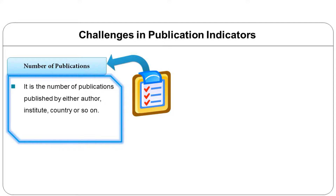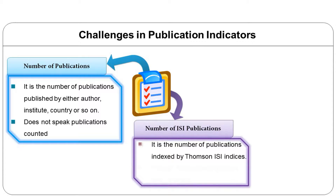Although this count is very straightforward and a forward indicator that can be easily calculated by authors themselves, one must be very careful when using it to compare authors or research groups. The disadvantages are that it does not take the size of the analyzed unit into account, does not speak to the impact of publications counted. The second indicator is number of ISI publications — the number of publications indexed by Thomson ISI indices. The disadvantages include inherent problems of scope and coverage of ISI indices and does not count non-ISI publications.